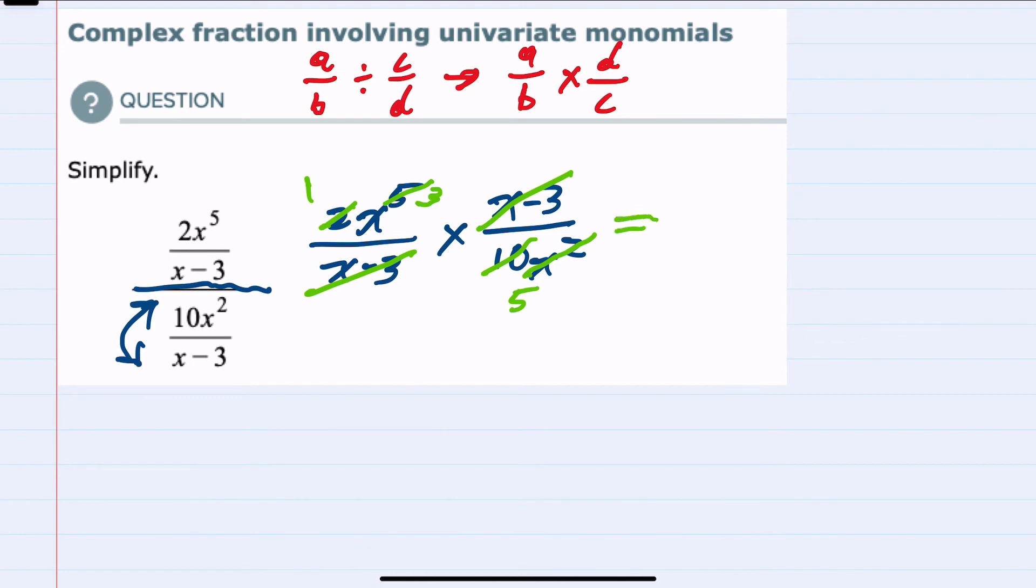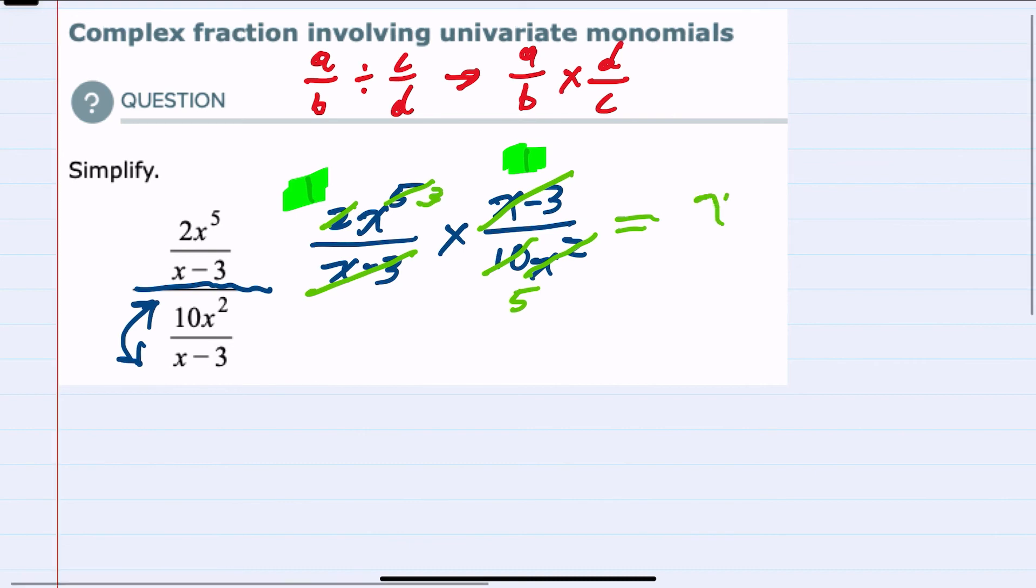Now multiplying across, this numerator is 1. Since it's been canceled, the 1 times the 1 means my leading coefficient is still 1, and I now have 3 x's. So x to the third.